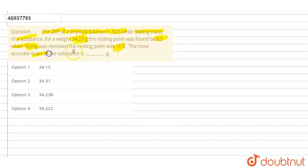The most accurate mass of the substance is what we need to find. The most accurate mass of the body is correct.